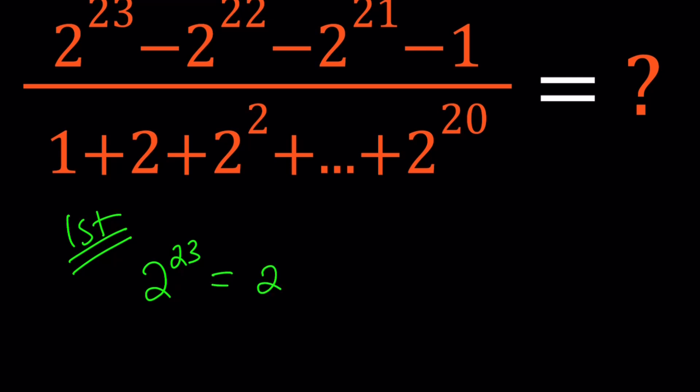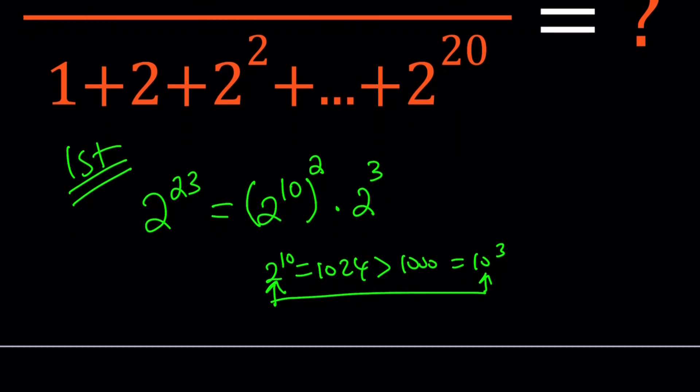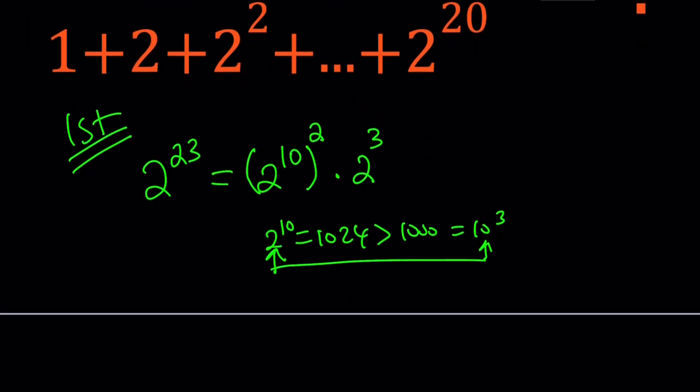If you are familiar with 2 to the 10th power, we can write this as 2 to the 10th to the 2nd, which is 2 to the power of 20, multiply by 2 to the power of 3. Now, 2 to the 10th power is 1024, which is obviously greater than 1,000, which is 10 to the 3rd power. This also allows us to compare some exponential numbers that contain 2 and 10 as bases, because those numbers are pretty close.